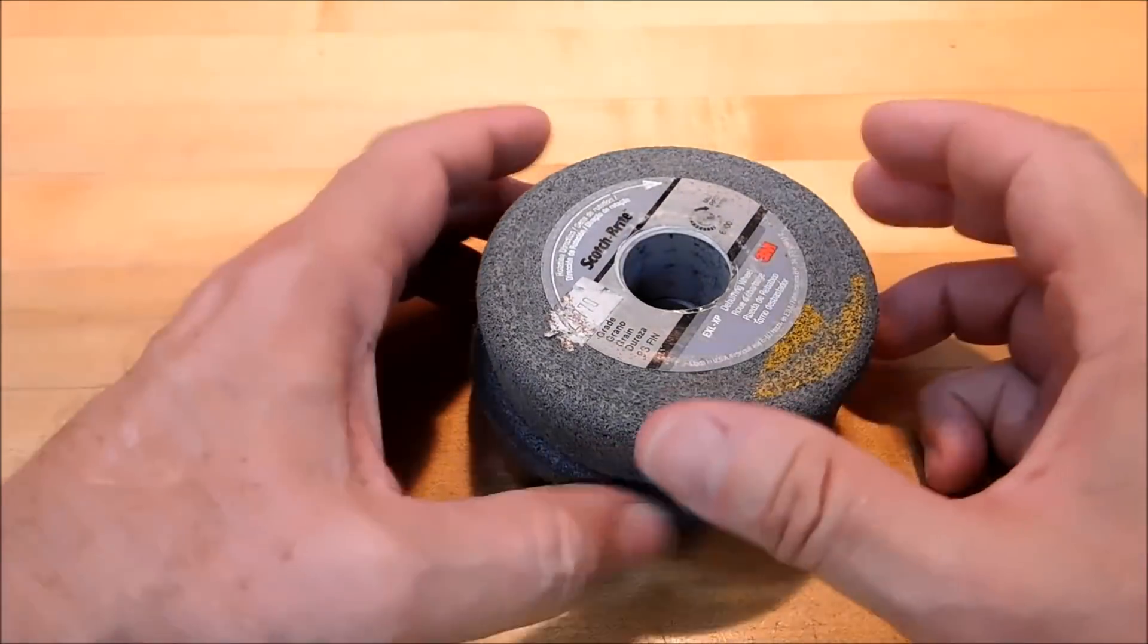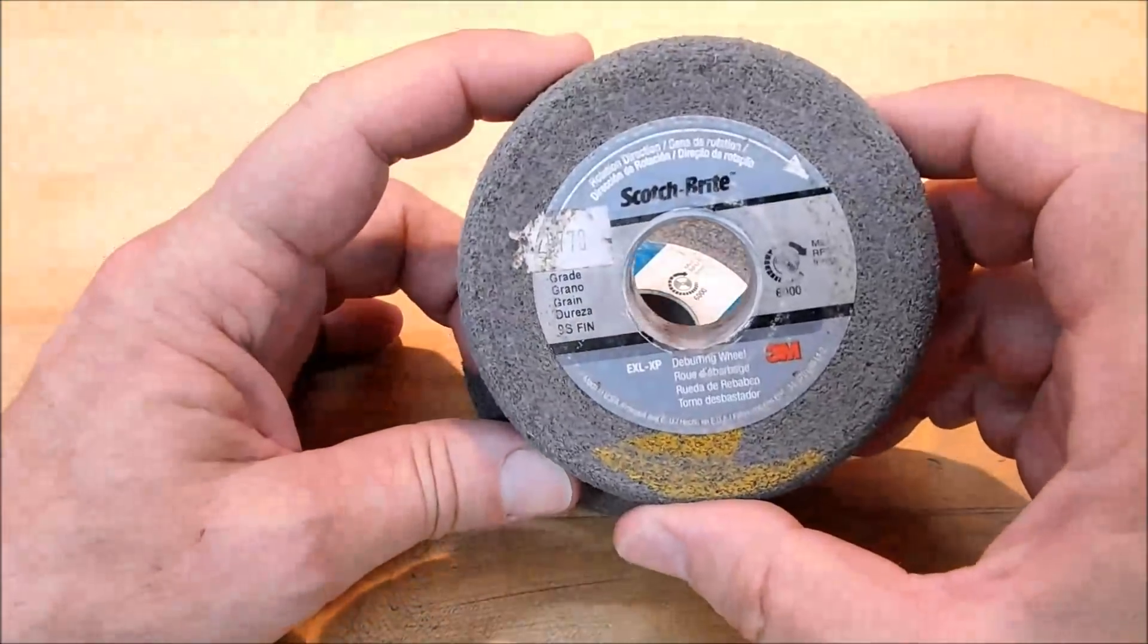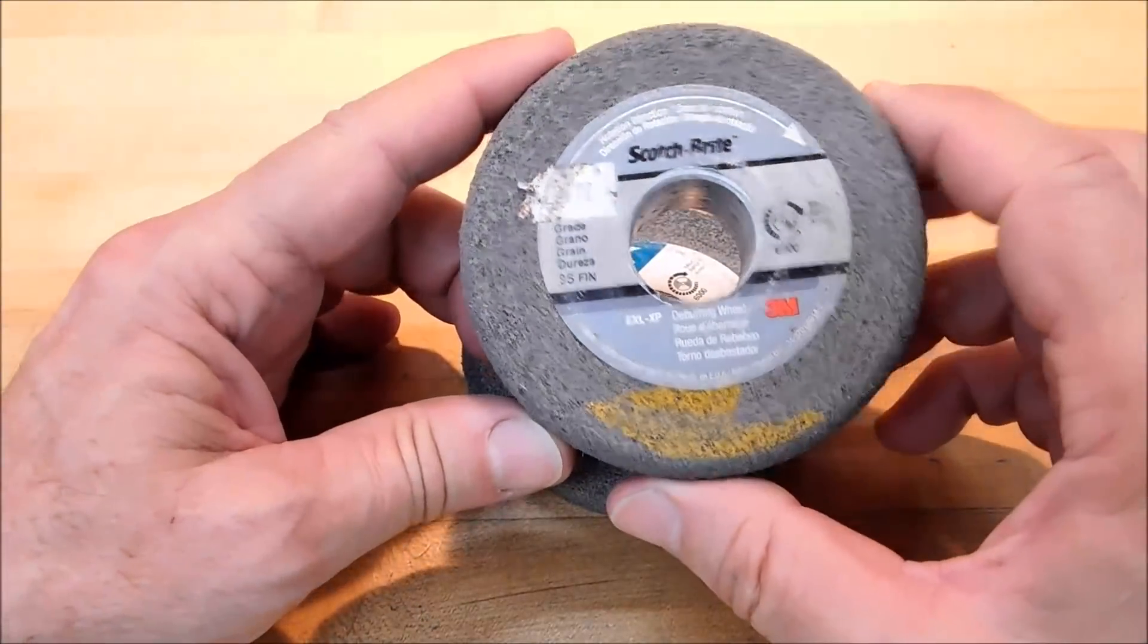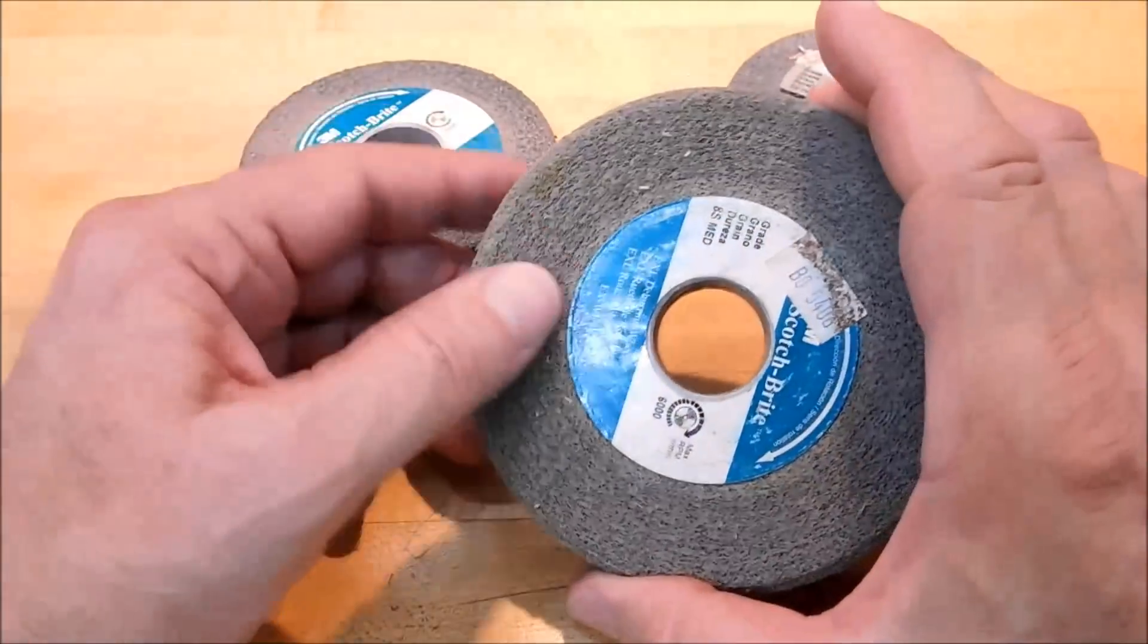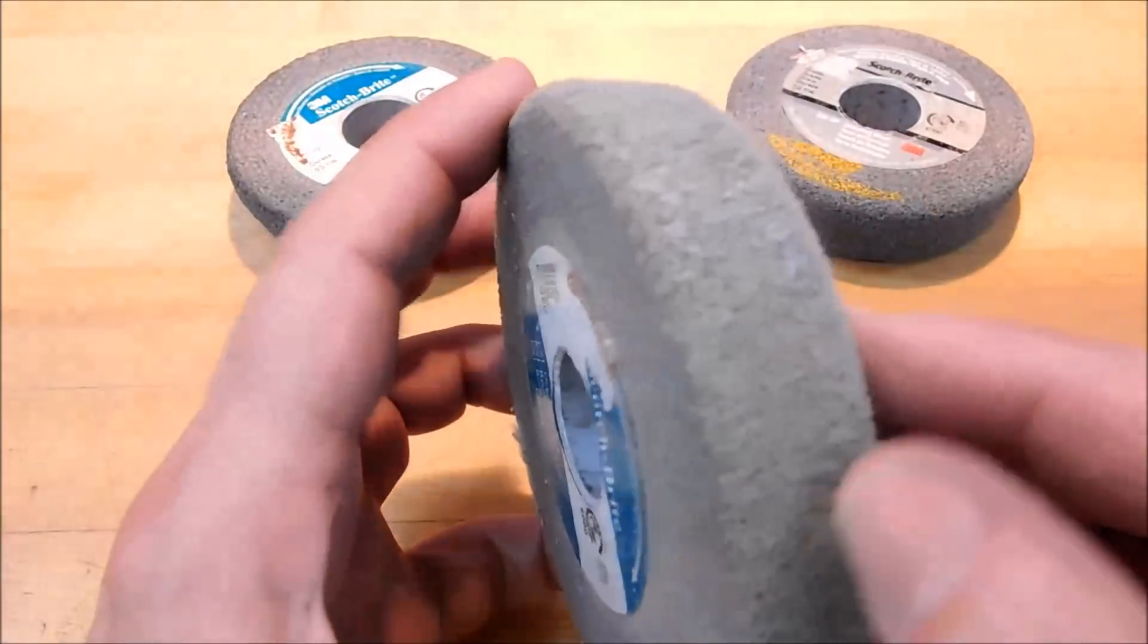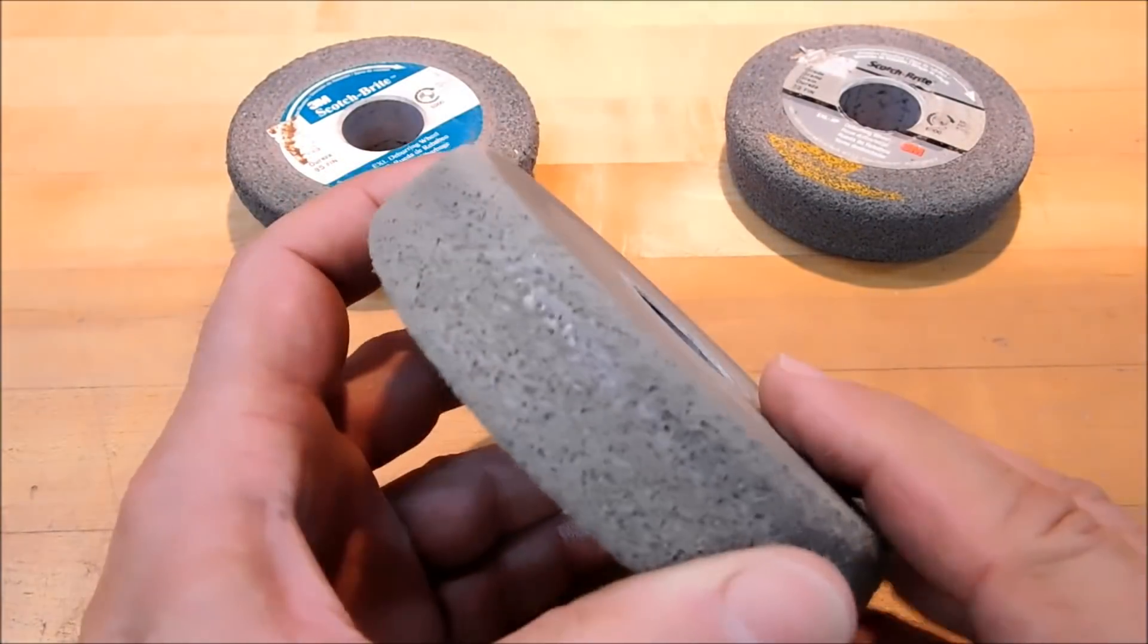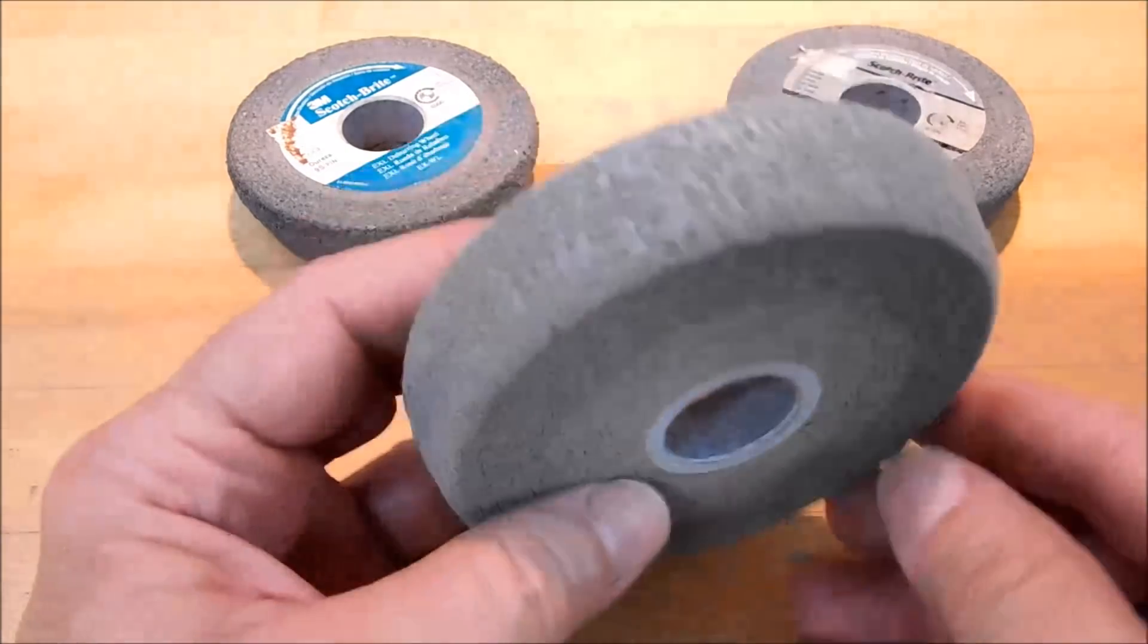My favorite go-to wheels for deburring on a production level are these guys right here. Scotch-Brite fiber wheels. You can get them in different densities, different thicknesses, different diameters, and it's very open-pore. These are more of a polishing wheel than a cutting wheel.